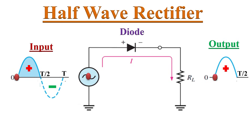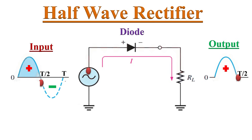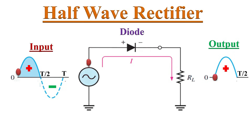A half-wave rectifier circuit allows only one half-cycle of the input AC signal while the other half-cycle is blocked. That is why it is called a half-wave rectifier — because it passes only half of the input AC supply.